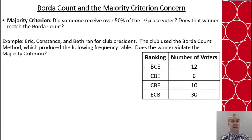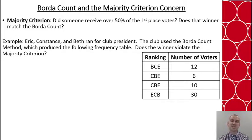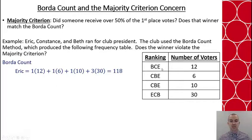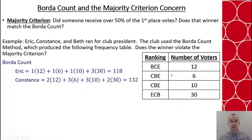Let's look at an example with the majority criterion. Say Eric, Constance, and Beth run for club president. The club used the Borda count method, which produced this frequency table, and we want to know: does this violate the majority criterion? First, let's calculate the Borda counts. Starting with Eric: he gets 1 point for these 12, 1 point for these 6, 1 point for these 10, and 3 points for these 30, for a total of 118.